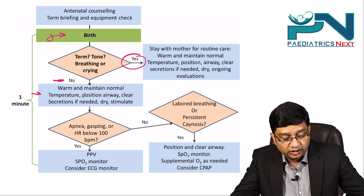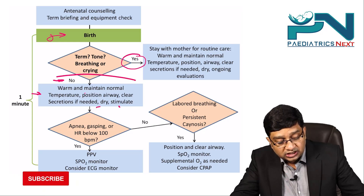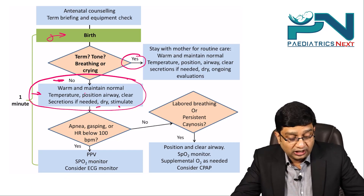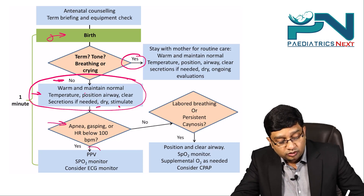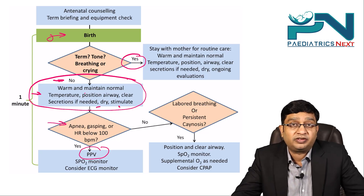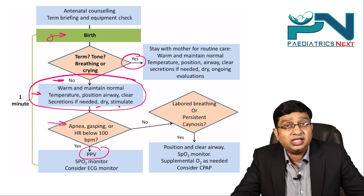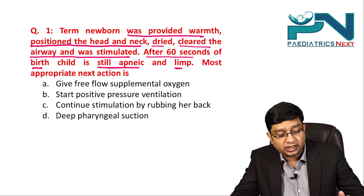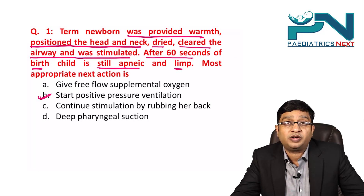Clear secretions, dry the child, and stimulate. In this question, all these steps have been done but the child still has apnea. If the child is still apneic, you should start positive pressure ventilation. The indications for PPV are: the child is gasping, heart rate is below 100 per minute, or the child is apneic.